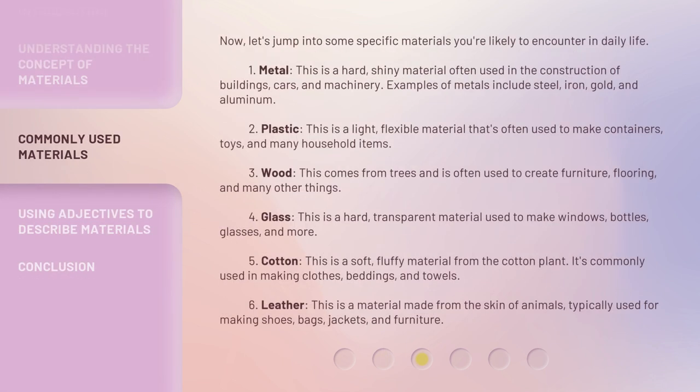Now, let's jump into some specific materials you're likely to encounter in daily life. 1. Metal: This is a hard, shiny material often used in the construction of buildings, cars, and machinery. Examples of metals include steel, iron, gold, and aluminum. 2. Plastic: This is a light, flexible material that's often used to make containers, toys, and many household items. 3. Wood: This comes from trees and is often used to create furniture, flooring, and many other things.